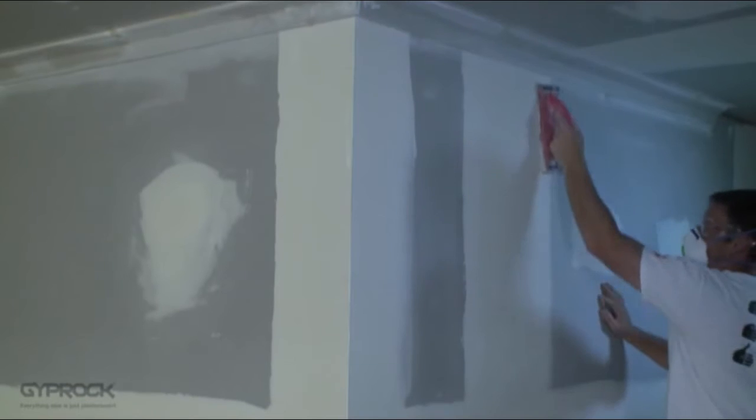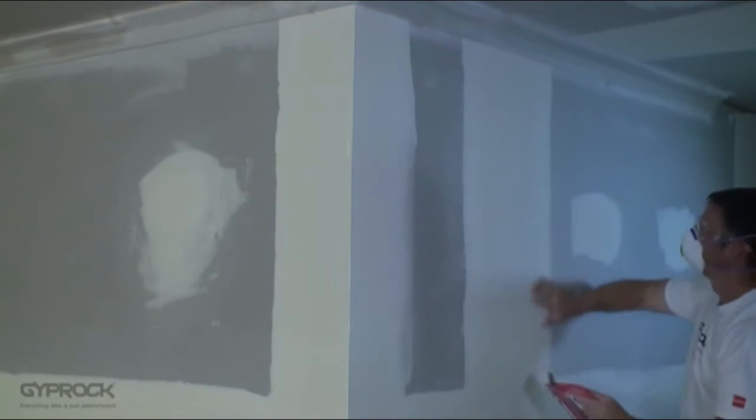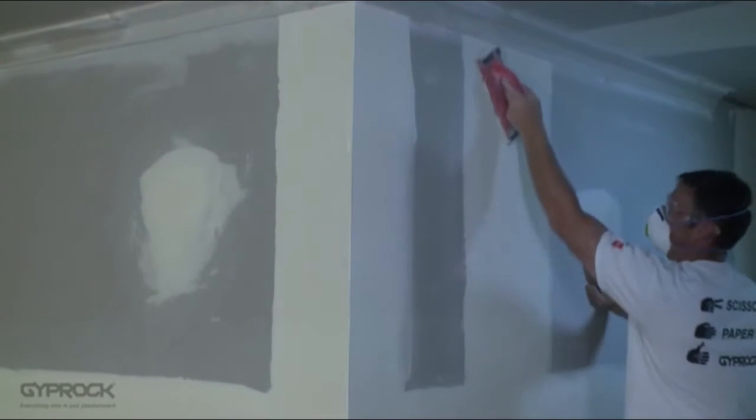The process is pretty much the same for butt joints and corners, starting at the edges of the compound and working towards the middle of the joint.